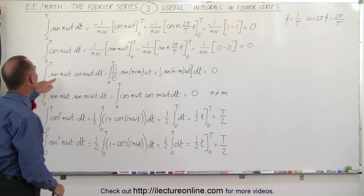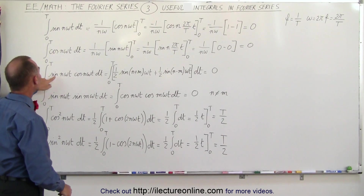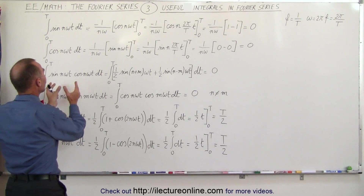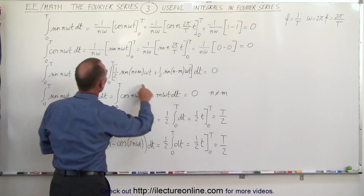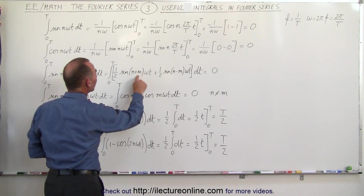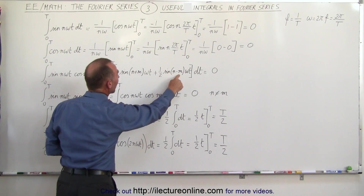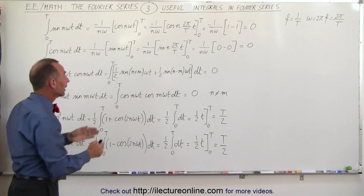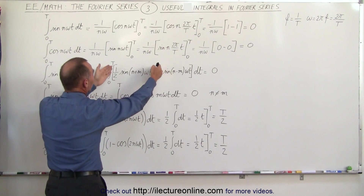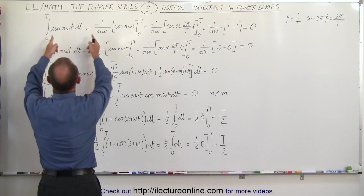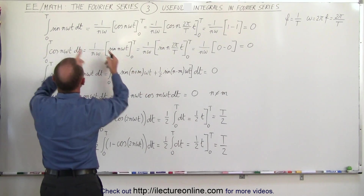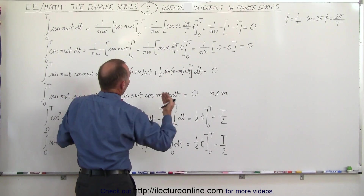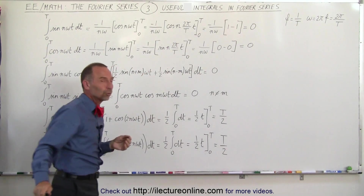Likewise, when we have an integral with the product of the sine of n omega t and the cosine of n omega t, that can be simplified into two integrals: the sine of (n plus m) omega t and the sine of (n minus m) omega t. Regardless of the values of n and m, and regardless of the constant one half in front, this looks very much like the first integral, so both terms equal zero, and automatically the whole product is zero as well.